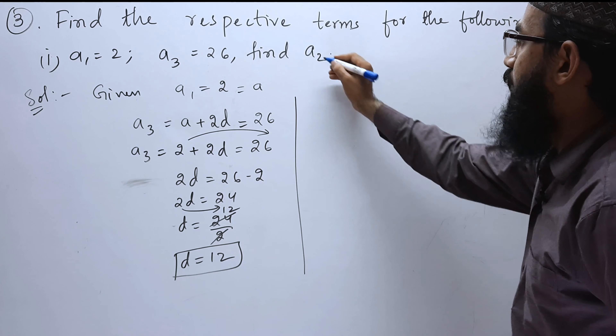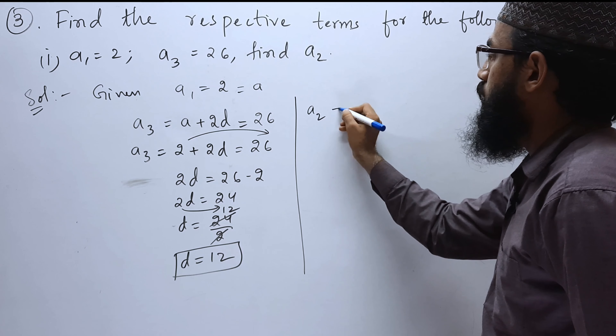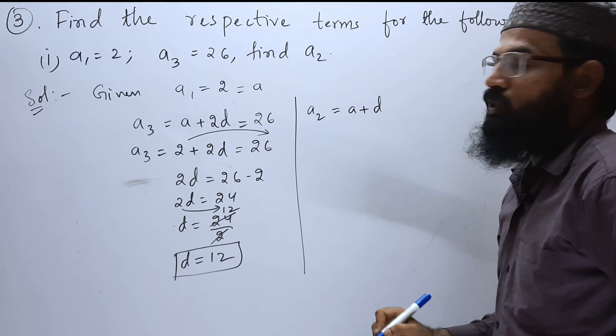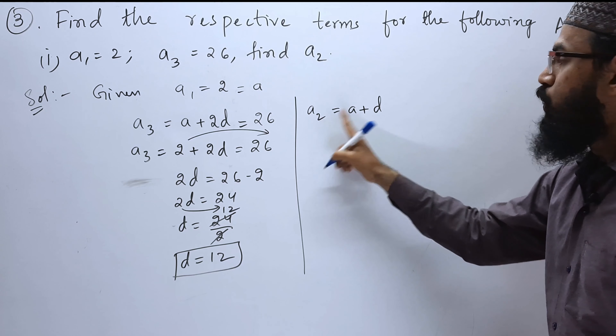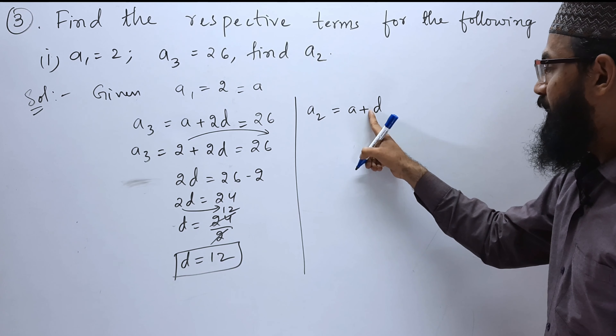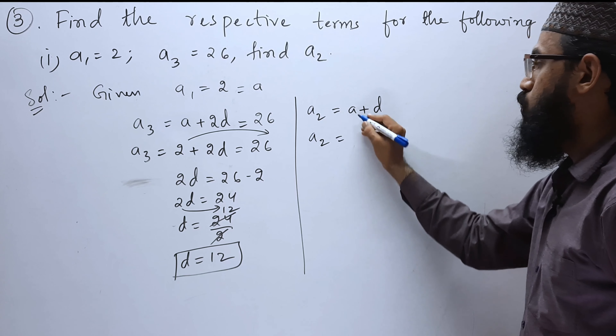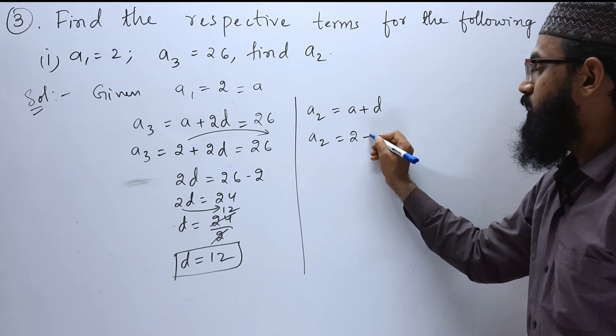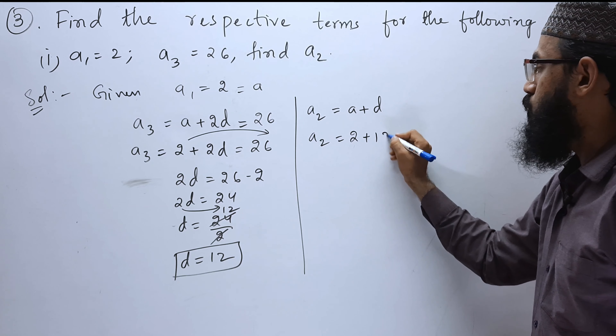Next, we have to find A2. A2 equals A plus D. A is 2 and D is 12, so 2 plus 12 is 14. Therefore A2 equals 14.